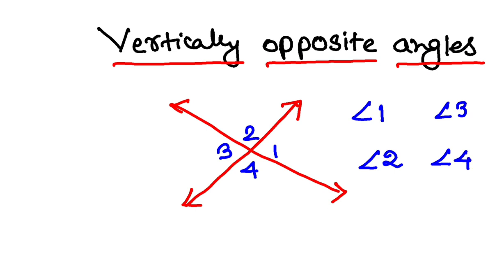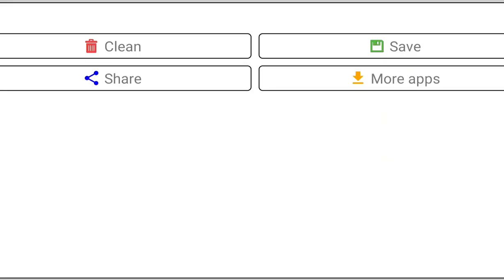Now, another interesting property is that vertically opposite angles are always equal. So basically, your angle 1 is equal to angle 3, and angle 2 is equal to angle 4. I hope you are clear with the concept.